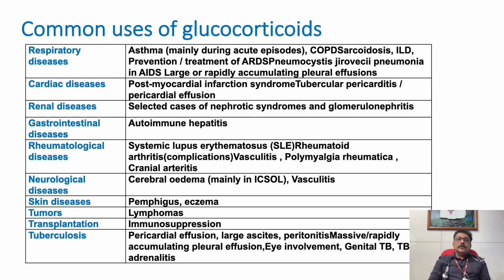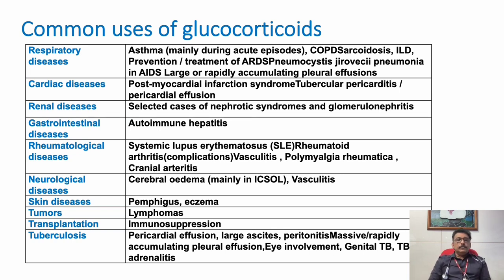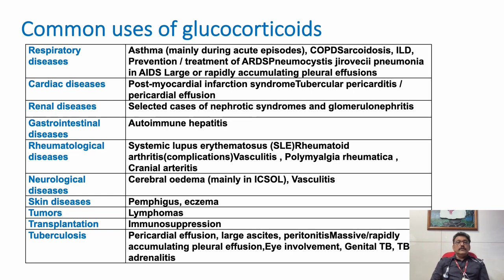For neurological diseases like vasculitis or acute disseminated encephalomyelitis, we can use steroids. In acute conditions like cerebral edema, steroids are used. We mainly use dexamethasone in CNS conditions because dexamethasone crosses the blood-brain barrier very easily, whereas other steroids have some difficulty crossing the blood-brain barrier. Methylprednisolone can also be used in brain conditions, but dexamethasone has better penetration to the brain.